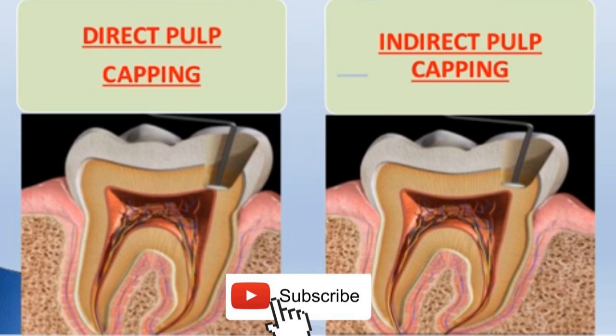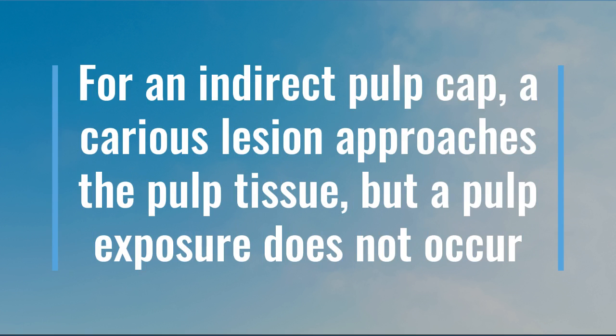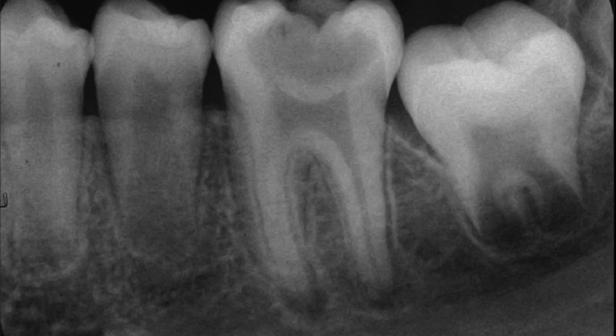For an indirect pulp capping, as the name suggests, it's indirect — so a carious lesion approaches the pulp tissue but pulp exposure does not occur. Here is a periapical image showing the radiolucency is close to the pulp, so if you remove the carious lesion, pulp exposure will not happen.